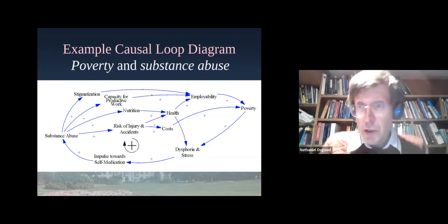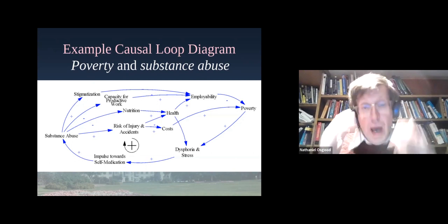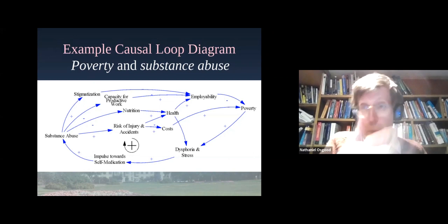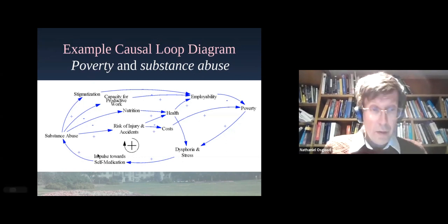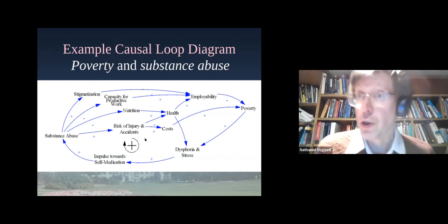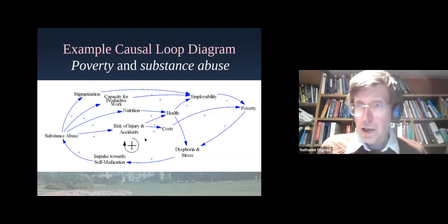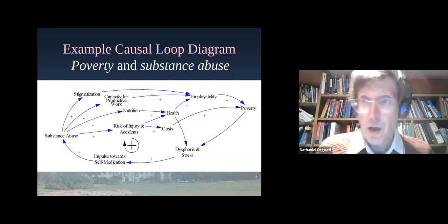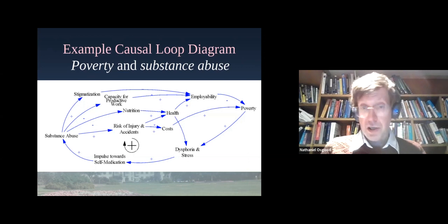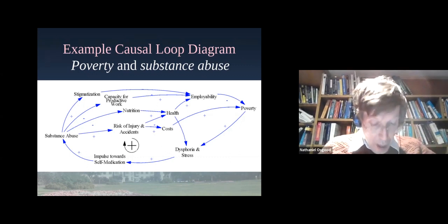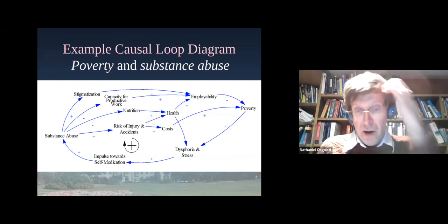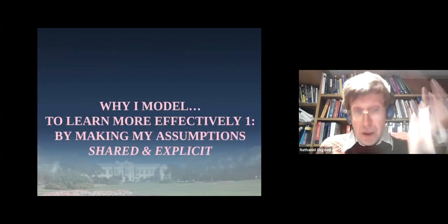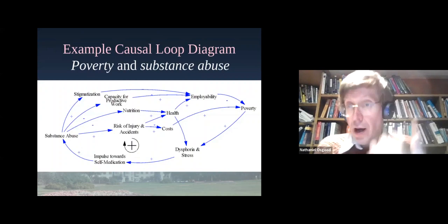We can take our assumptions about the world — say, the relationship between substance abuse and poverty — and put them down in a causal loop diagram. Those interested could look up Peter Hovmand's work on community-based system dynamics, to see how far diagrams like this can go for gathering community energy and understanding. Models help us make our assumptions more explicit so that others can help us refine them.